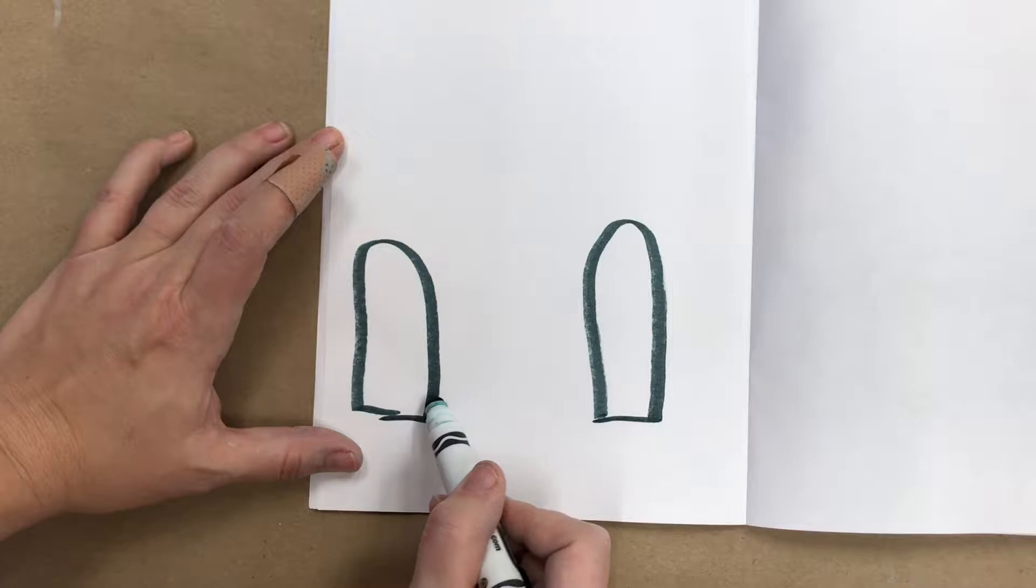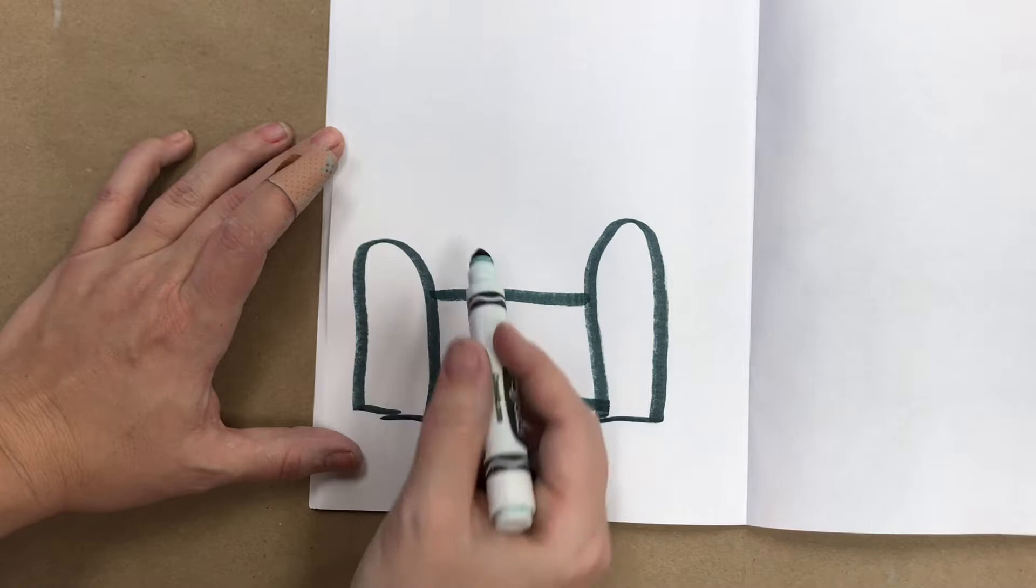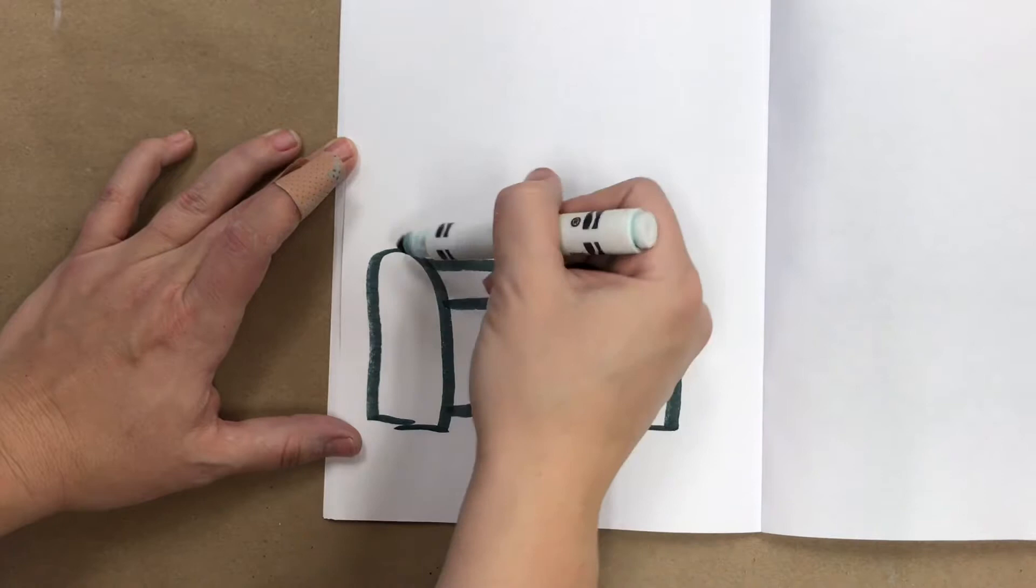Then draw a straight line connecting the two across the bottom. Another line will make a square in there. That's going to be the front of your chair.